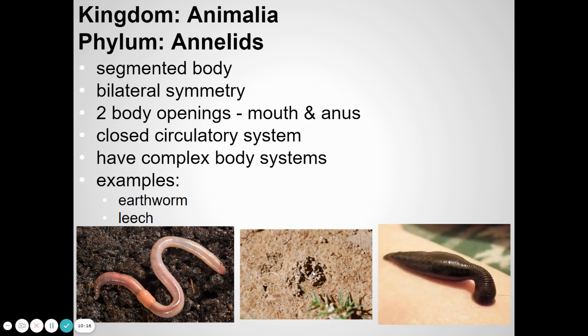Another segmented worm is the leech. Leeches sometimes live in fresh water. They can bite animals and make a meal of their blood. They have a sucker that attaches to an animal — typically frogs, amphibians, or other things — and at the head end there's a little mouth that bites into the animal. They drink blood until they're big and bloated, then fall off and digest that blood. That's what they eat.